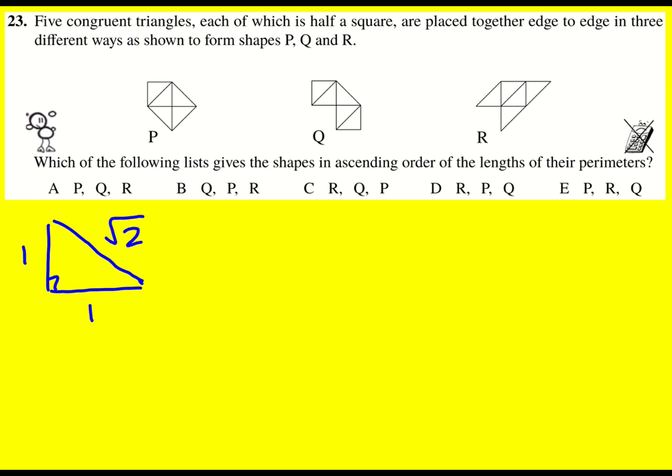And then I can start writing the perimeters down in terms of these numbers. So let's do that. P, right. I've got these ones here, so I've got two and I've got three of the diagonal ones, so it's going to be 2 + 3√2.